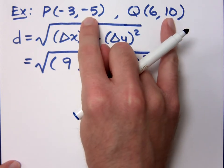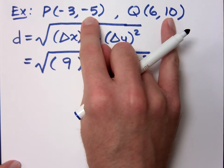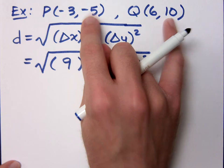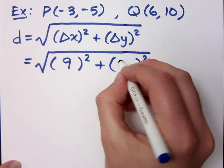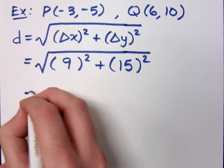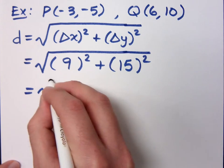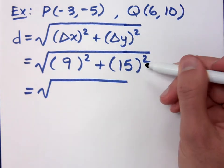What's the change in y? From negative 5 to 10 is a change of 15. All right. Well, we've got some math to work out here. But are you guys okay with me getting 9 and 15?